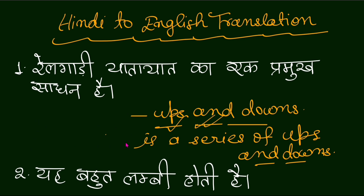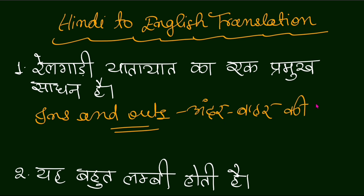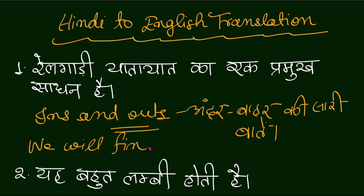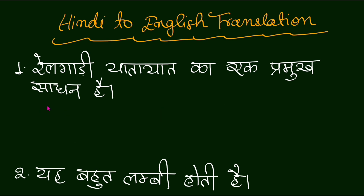Similarly, friends, there is another idiom: 'ins and outs.' This is also quite important — it means andur-bahar ki saari baatein, i.e., all the inside and outside details of something. For example: 'We will find out the ins and outs of this matter.' I will discuss each and every rule of grammar, so don't worry and watch the video till the very end.